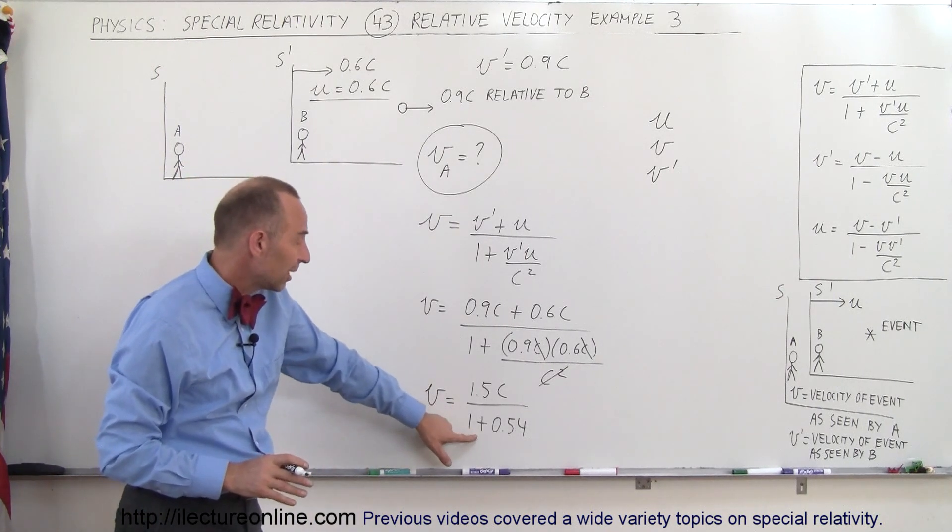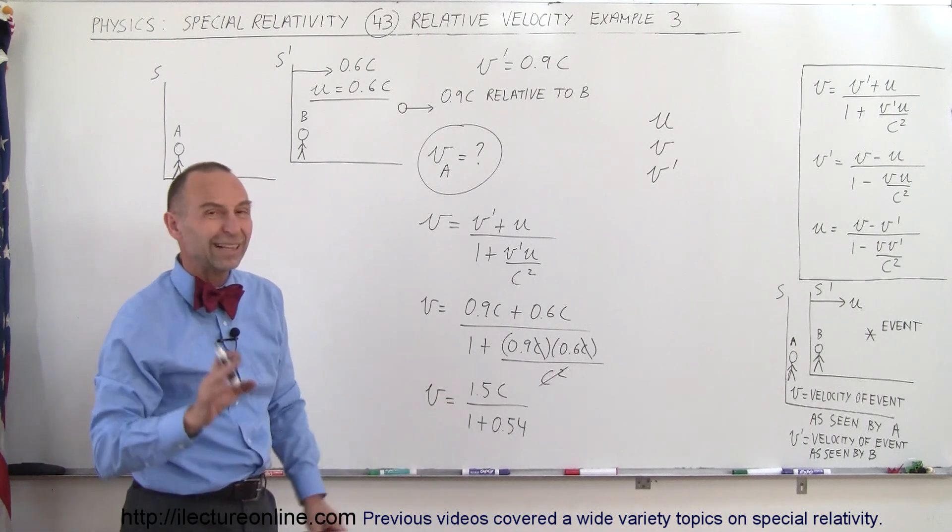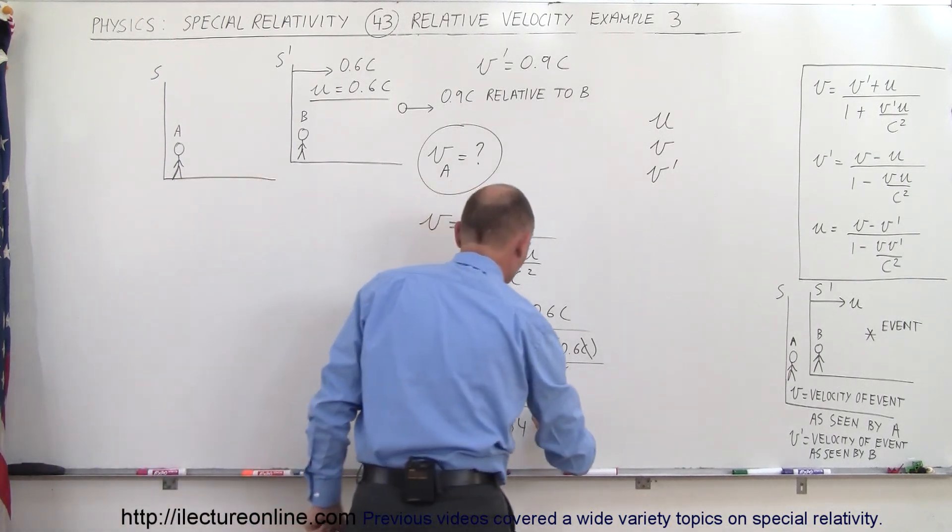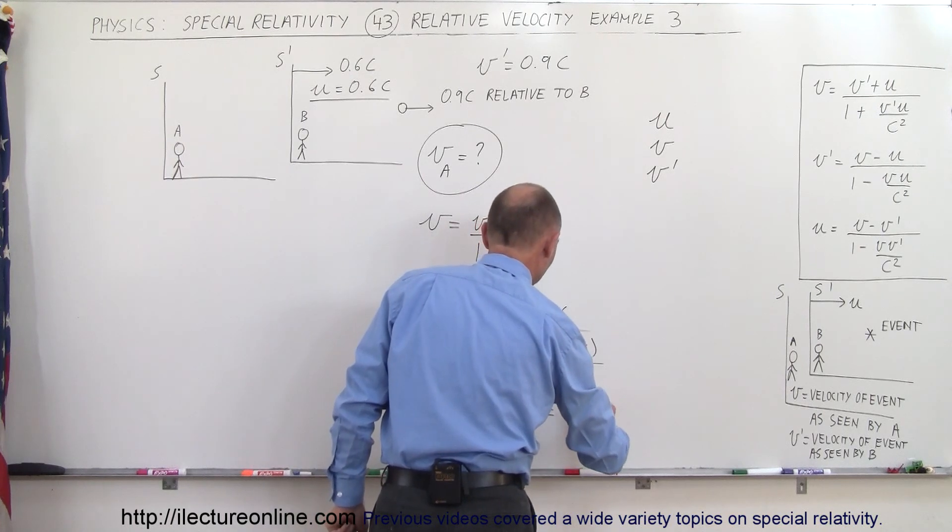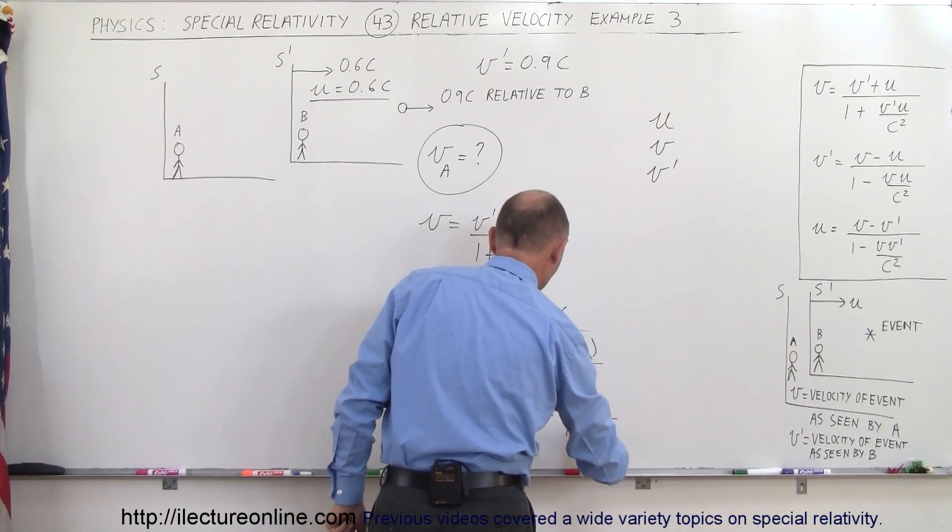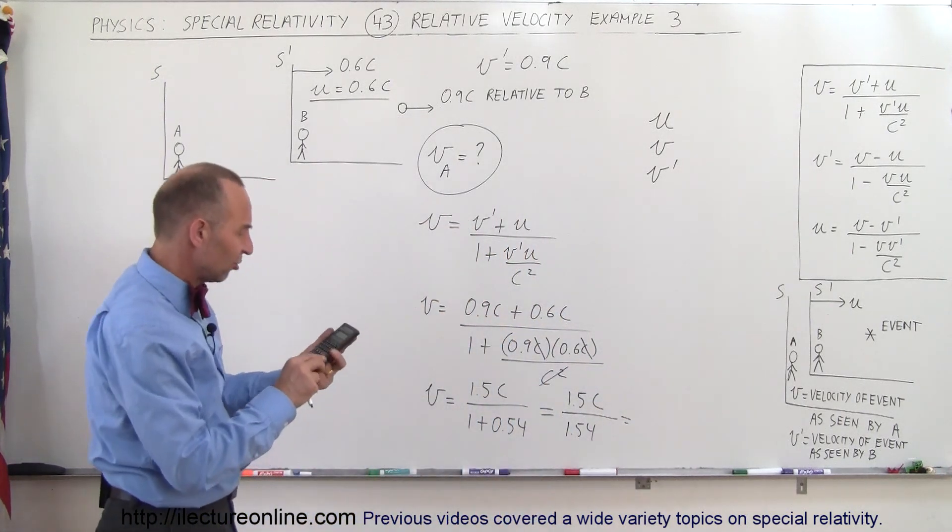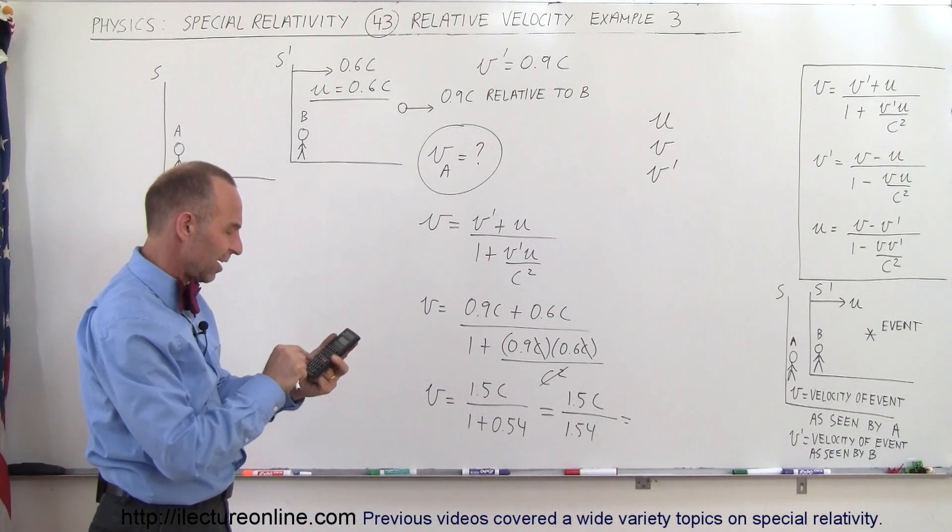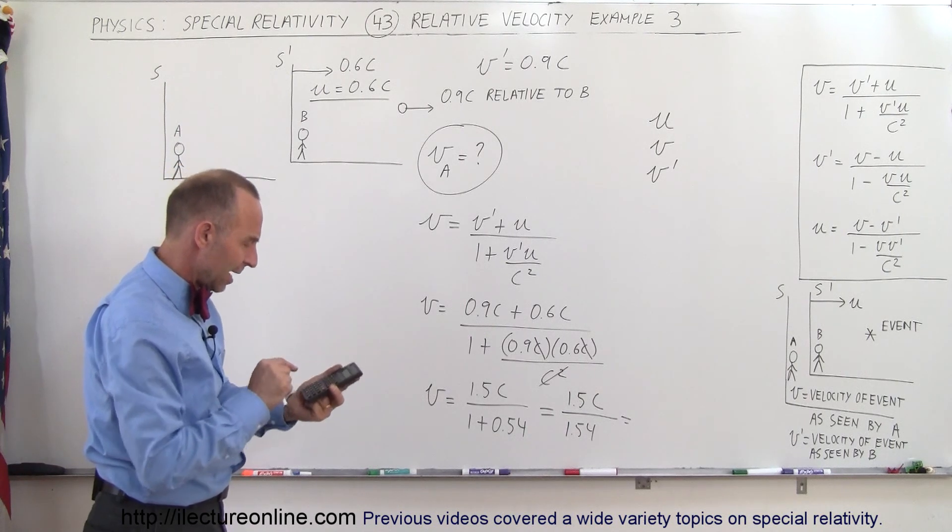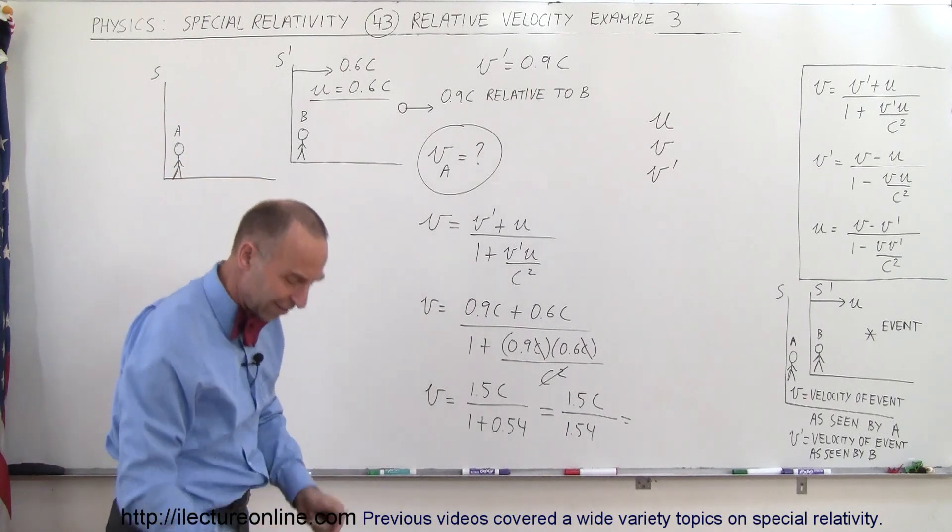But notice that the denominator is bigger than 1, so therefore the fraction will be less than C, which is what we would expect. So this is 1.5C divided by 1.54, and that will tell us the velocity of the event as seen by the stationary observer. So 1.5 divided by 1.54, and that is 0.974.